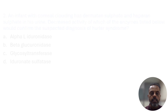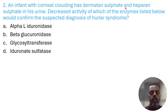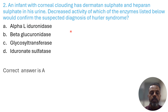Third MCQ: An infant with corneal clouding has dermatan sulfate and heparan sulfate in the urine. Decreased activity of which enzyme would confirm the suspected diagnosis of Hurler's syndrome? Options: (A) alpha-L-iduronidase, (B) beta-glucuronidase, (C) glycosyl transferase, (D) iduronate sulfatase. Hurler's syndrome is associated with deficiency of alpha-L-iduronidase. The correct answer is alpha-L-iduronidase.